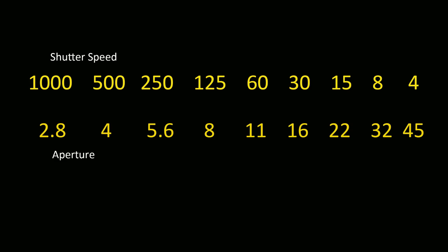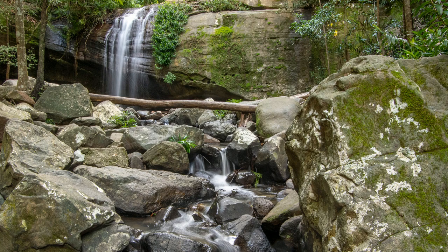This is where aperture comes in and we can see how the two settings work hand in hand. Because our hypothetical photo was taken at a thousandth of a second with the aperture wide open at f2.8. When we slowed the shutter speed down to an eighth of a second, we let in all that extra light and would have overexposed the image. But if we make the aperture smaller, we can reduce the light. And if we take it all the way down to f32, we've reduced the light by the same number of stops as our change in shutter speed. Now our exposure is exactly the same as when we started. By using shutter speed and aperture together, we can get the water effect we want and still maintain a correct exposure.